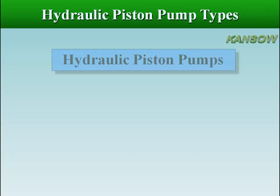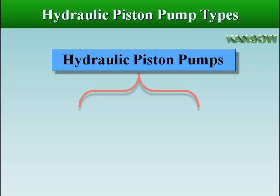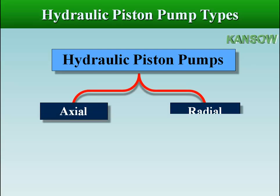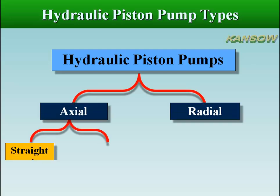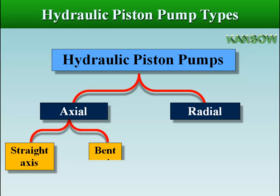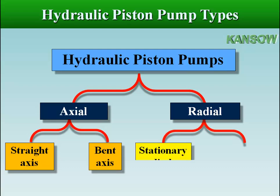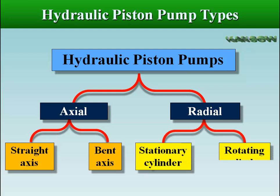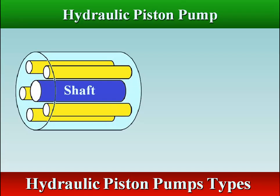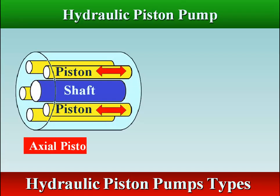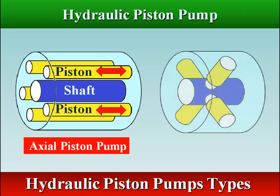There are two types of fixed delivery piston pump: axial and radial. Piston pump classification is based on the relationship between the axes of the power input shaft and piston motion.